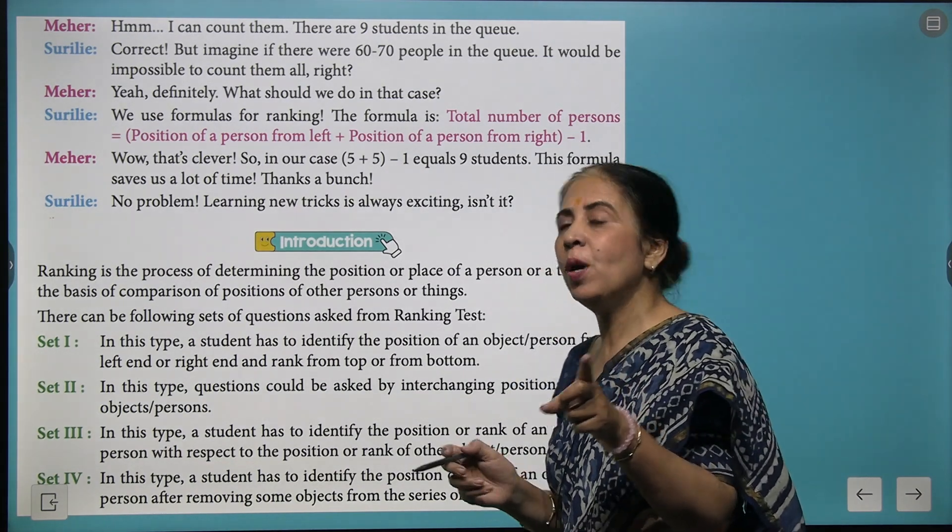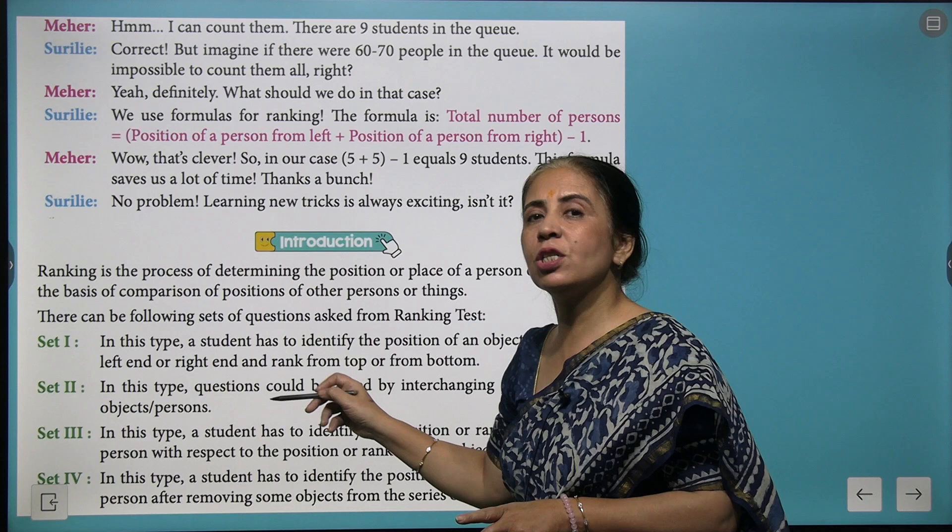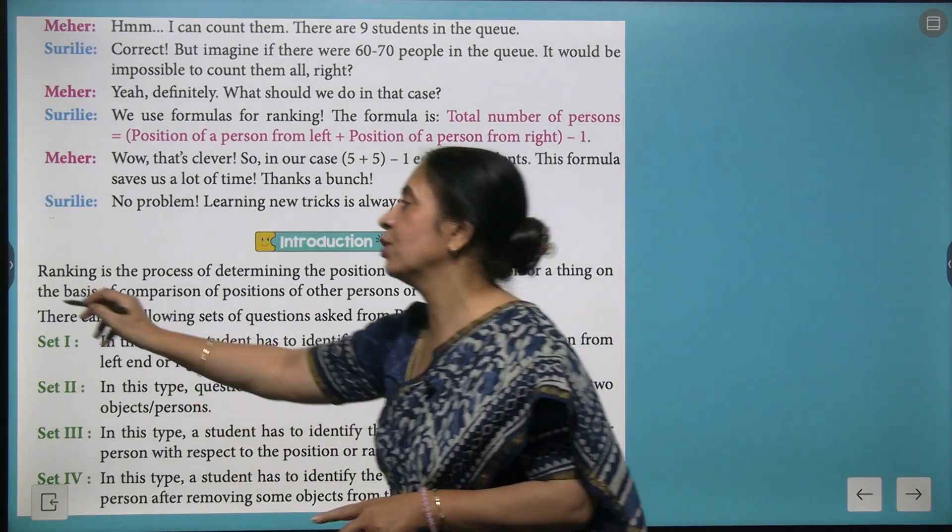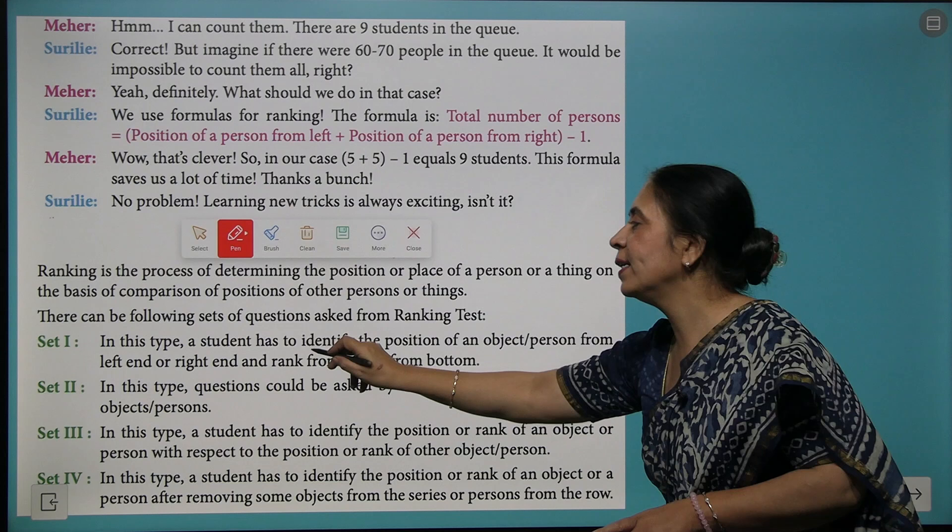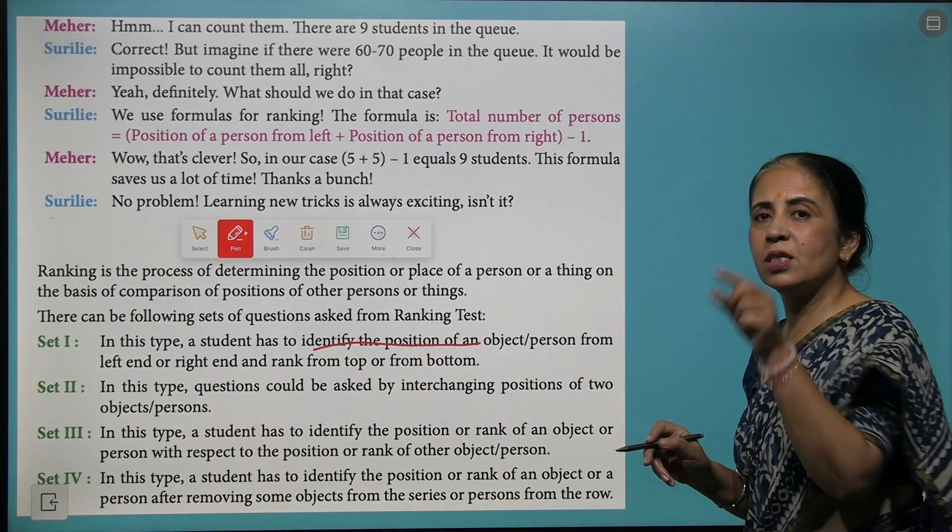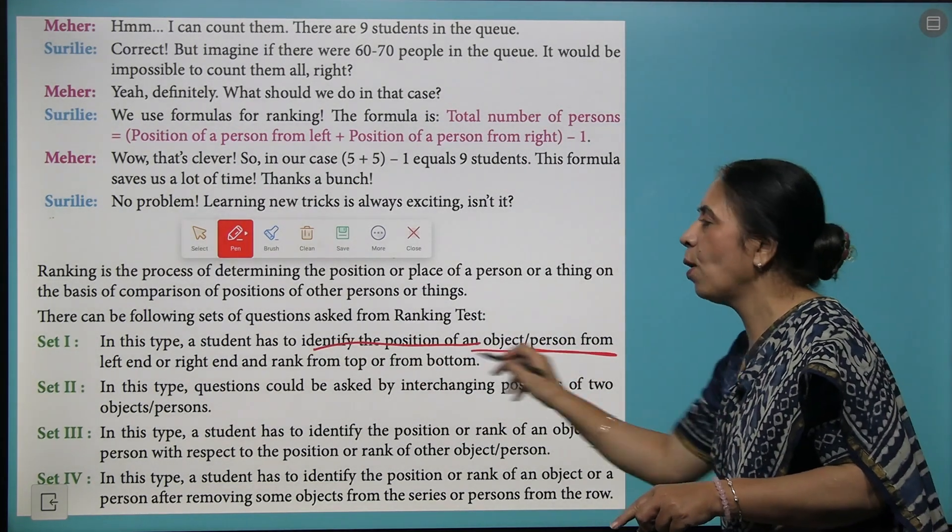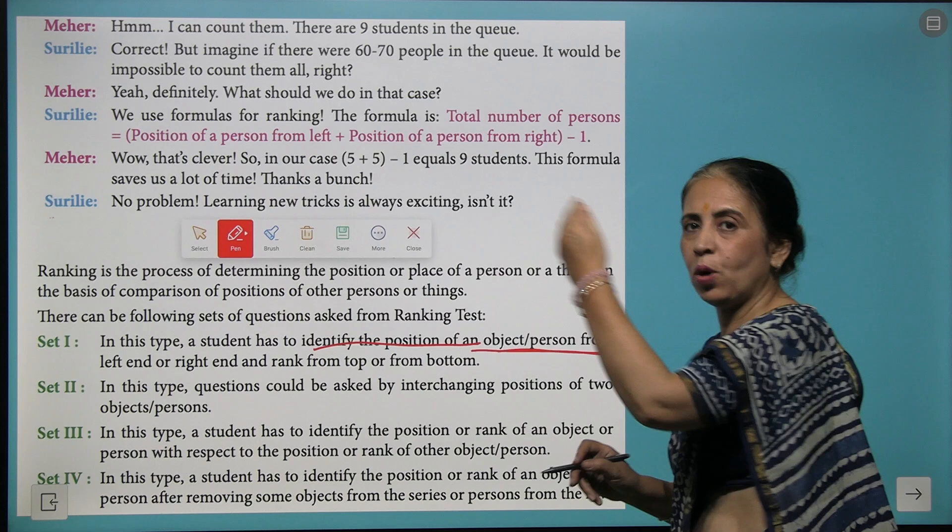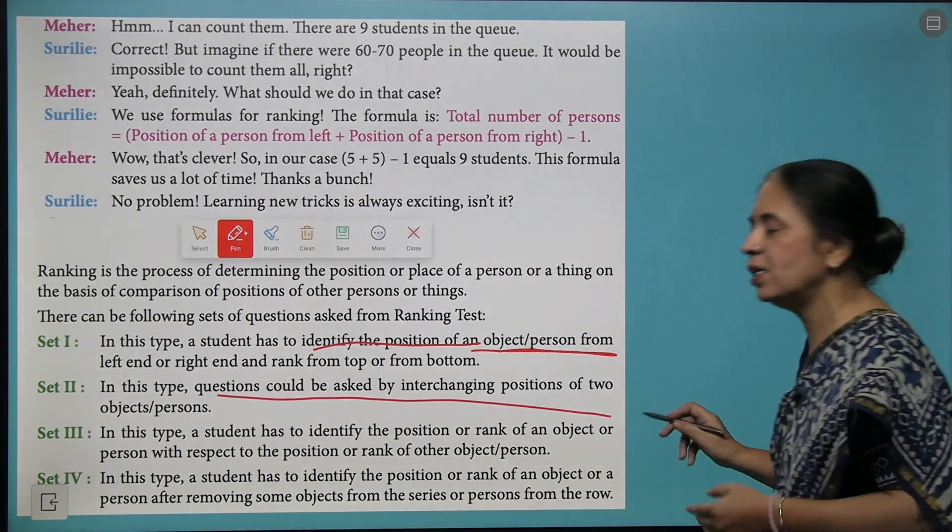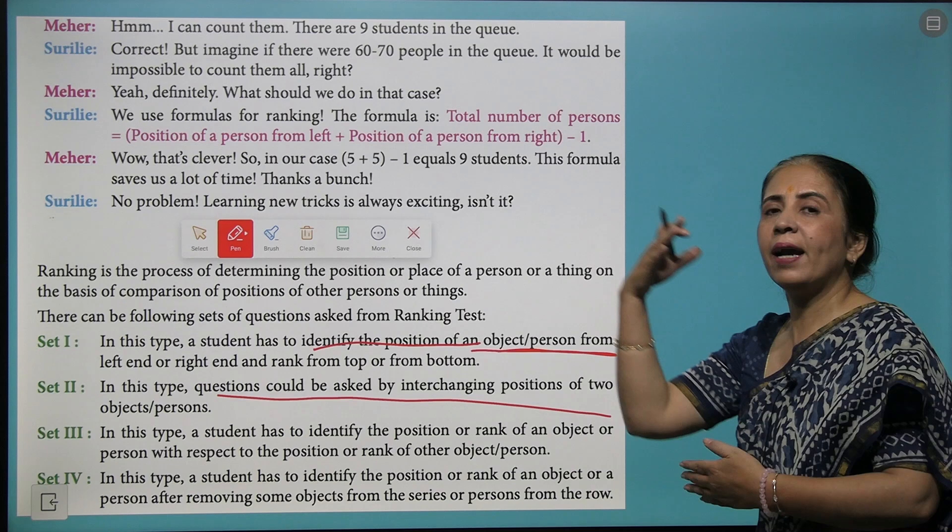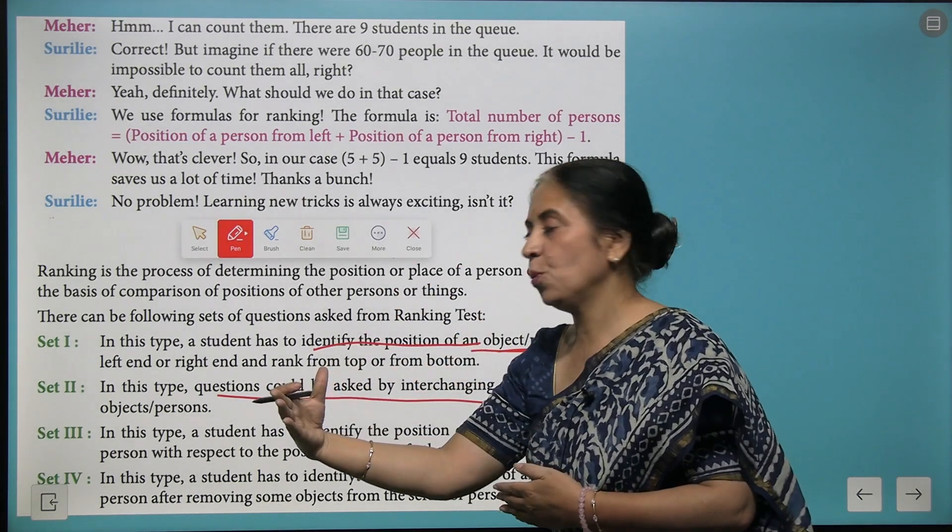We come across four categories of questions. The first one: you have to identify the student's position or the object from the left hand or the right hand. Second category: you have to interchange the position and check what is the new position.